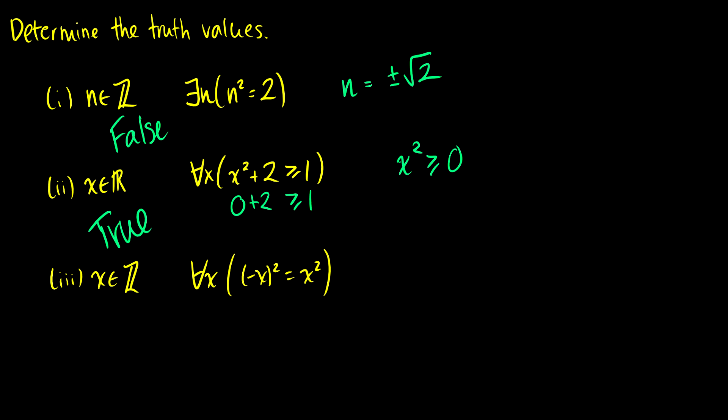Third one: for x in the integers, for all x, negative x squared is going to equal x squared — is this true or false? Let's put in a negative number, 0, and a positive number to see if this holds. So 0 squared equals 0 squared — that's good. If we take a positive number, say 3, then negative 3 squared is going to be 9, and that equals 3 squared which is 9.